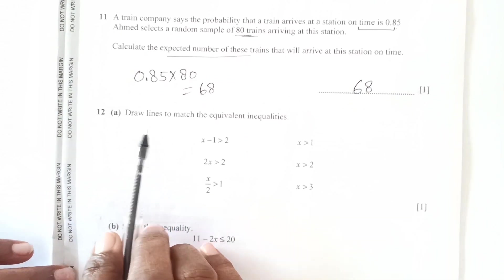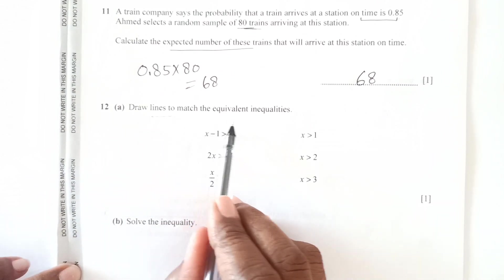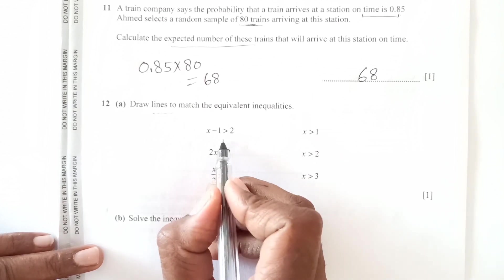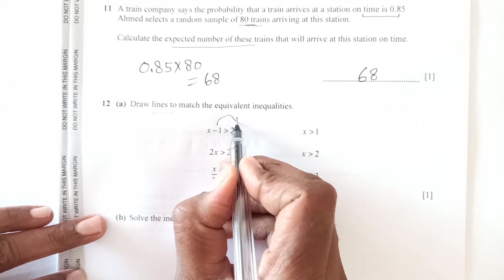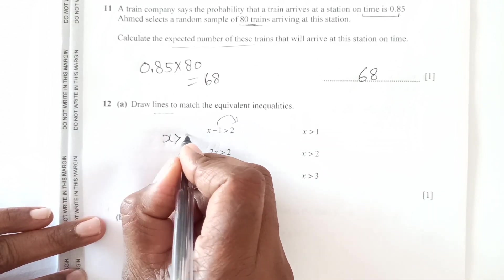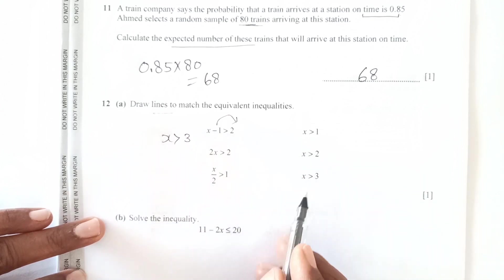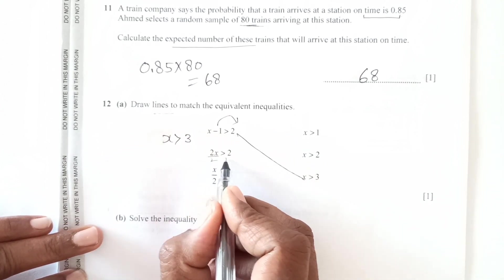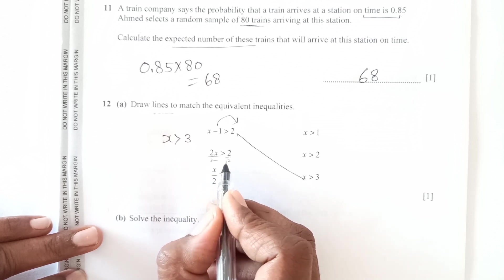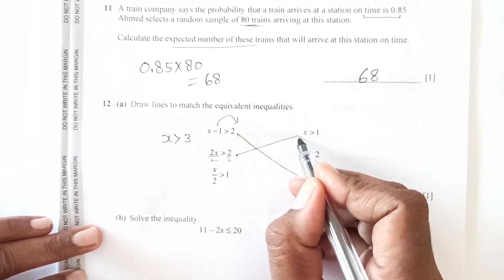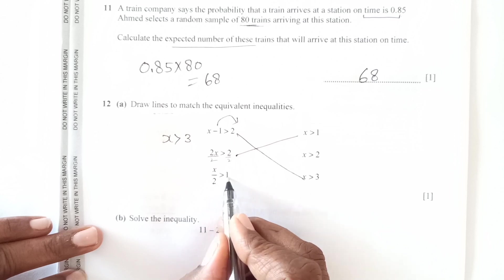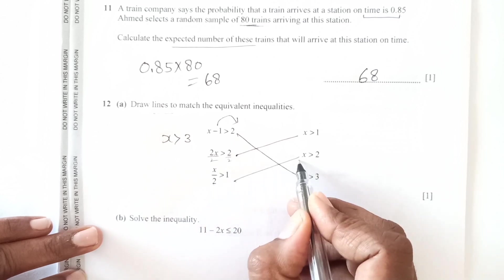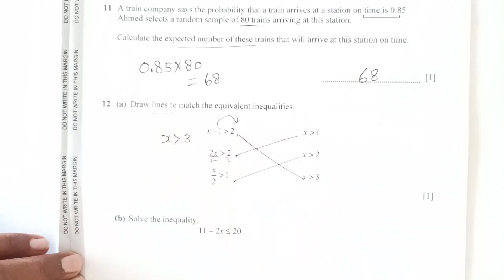Now draw lines to match the equivalent inequalities. So this is x, shift 1 to other side. So this is x greater than 2 plus 1 is 3. So x greater than 3 is here. So this we are going to divide it by 2, divide it by 2. This is 1 here, x greater than 1 is here. So this will be multiplied here, x times, x is greater than 2.